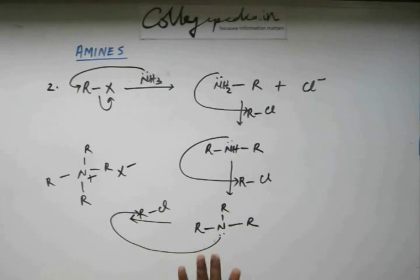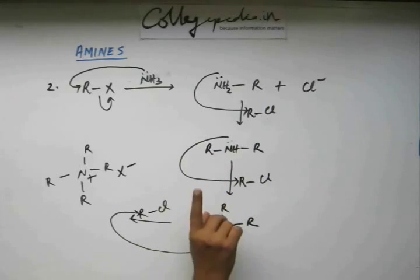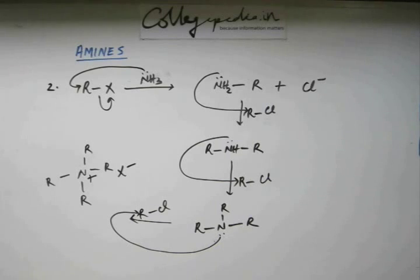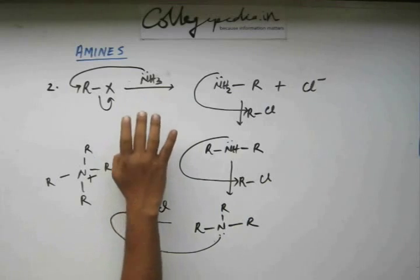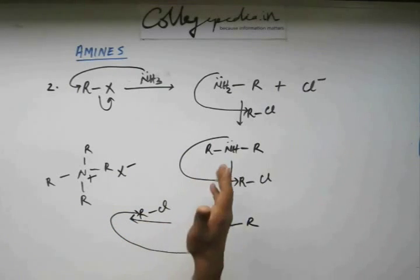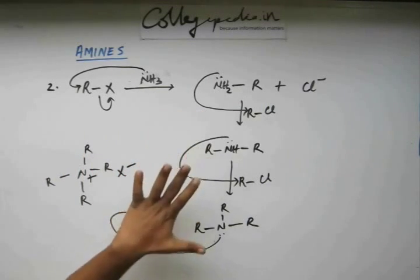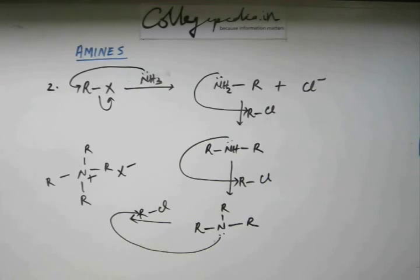So if we have excess of RX, all of the primary, secondary, and tertiary amines will ultimately convert to the quaternary ammonium salt. There will be a mixture: some percentage will be primary, some secondary, some tertiary, and some quaternary ammonium salt. If we want the primary amine as a pure product, we cannot get it through simple substitution alone. However, if we take ammonia in large excess, that ensures ammonia is the species going for reaction rather than the one, two, or three degree amines — giving a high percentage of primary amine.